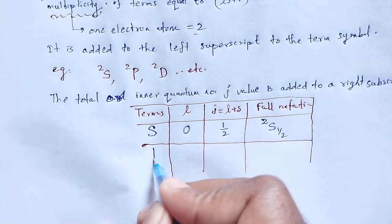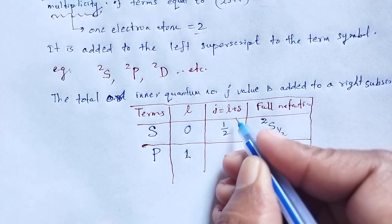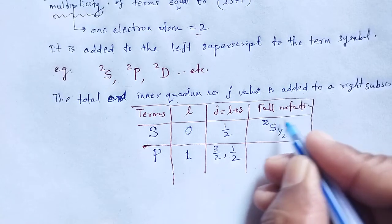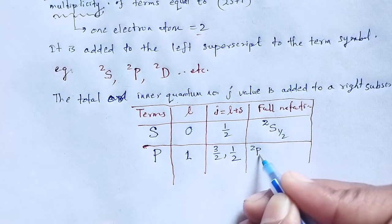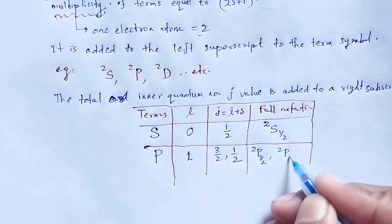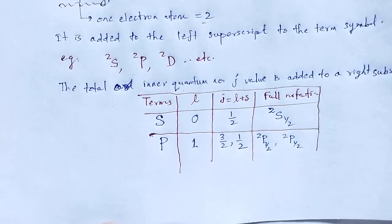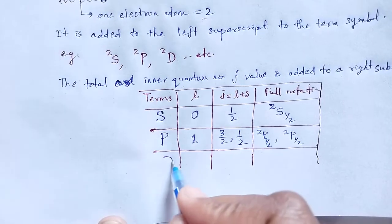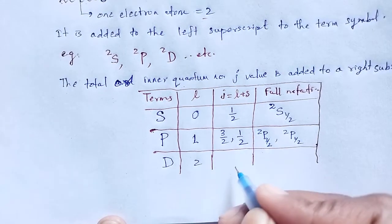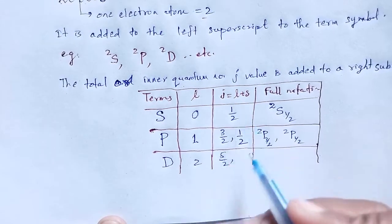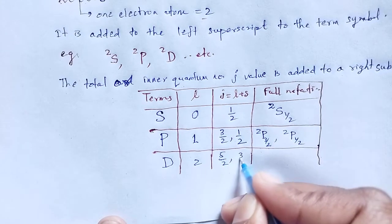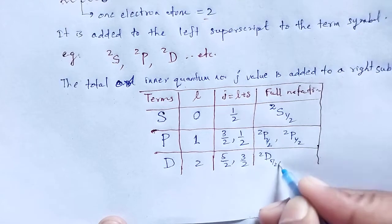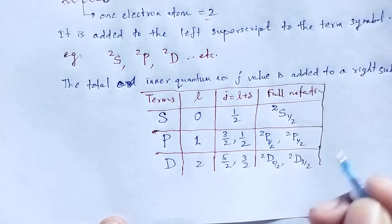For term P, L equals 1; J equals 1 plus one-half equals 3/2, and J equals 1 minus one-half equals one-half. The full notations are ²P₃/₂ and ²P½. For term D, L equals 2; J equals 2 plus one-half equals 5/2 and J equals 2 minus one-half equals 3/2, written as ²D₅/₂ and ²D₃/₂.